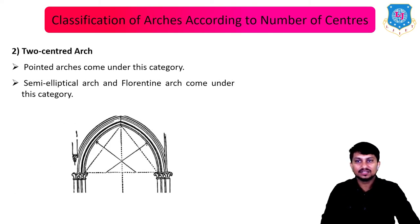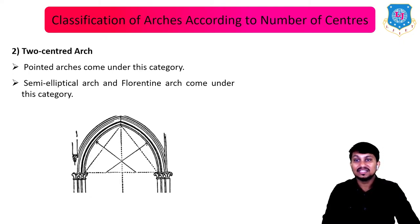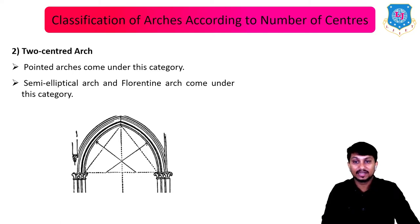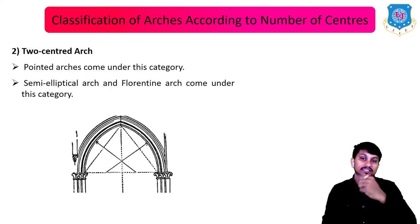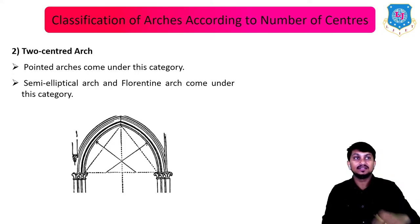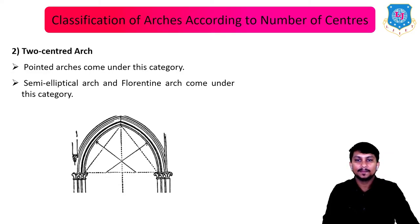Second is the two-centered arch. Pointed arches come under this category. Semi-elliptical arch and Florentine arch also come under this category, in which two centers are used.